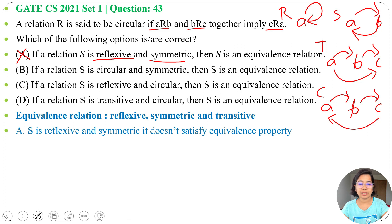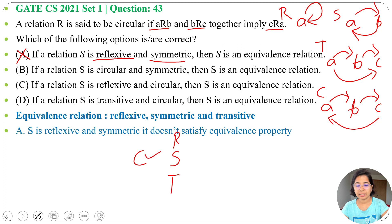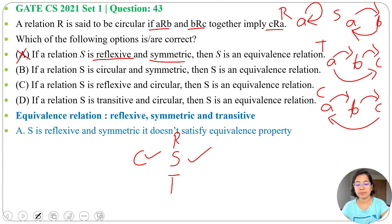Option B: If a relation S is circular and symmetric, then S is an equivalence relation. For equivalence it should be reflexive, symmetric, and transitive, but here it's only circular and symmetric. Let's try to derive whether it can be reflexive and transitive from circular and symmetric.